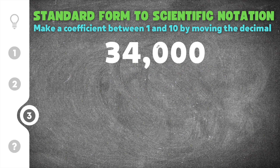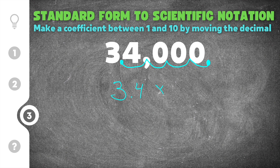Our final practice problem gives us 34,000. All whole numbers have a decimal point at the very end. We move it to give a coefficient between 1 and 10: 1, 2, 3, 4 times, landing at 3.4. So our coefficient is 3.4 times 10 to an exponent. We moved the decimal four times, so the exponent is 4. We moved it to the left, so it stays a positive 4.